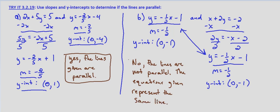They're just different forms of the same line because they have the same slope and the same y-intercept.